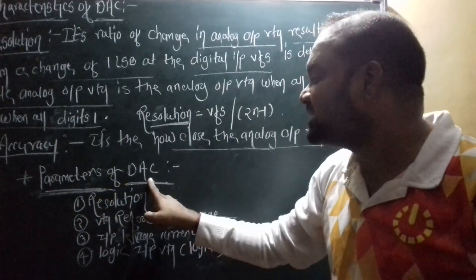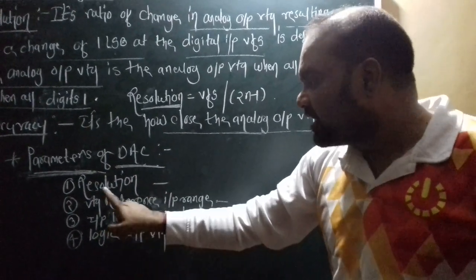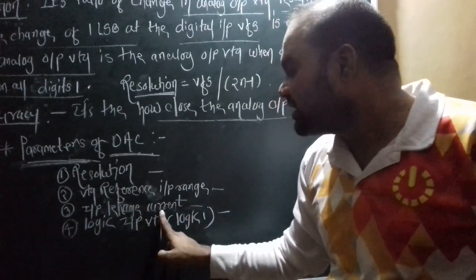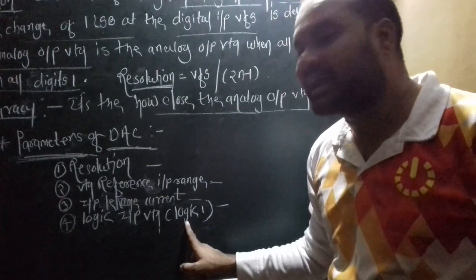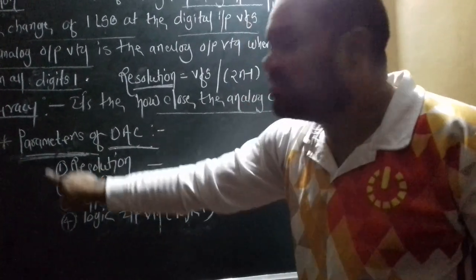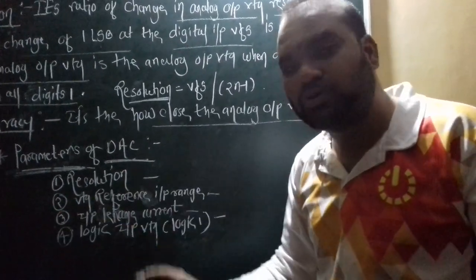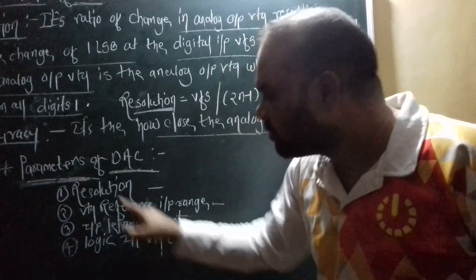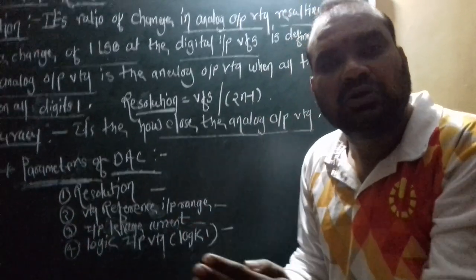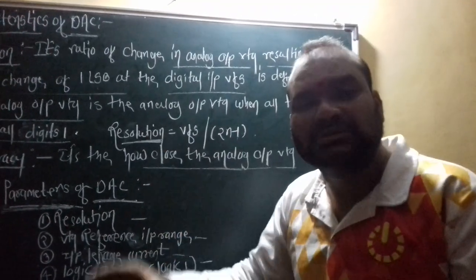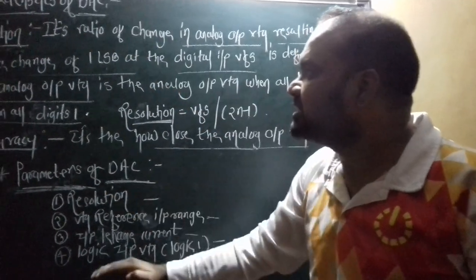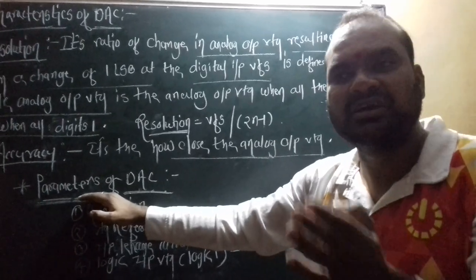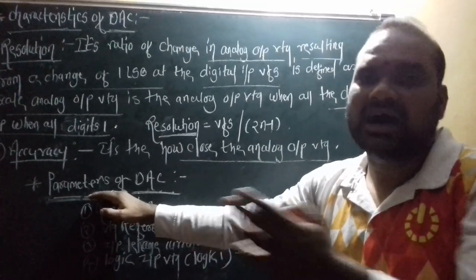The last point is the parameters of DAC. There are four parameters. I hope all of you understand. If you have any query or doubt, please ask me by message or call.